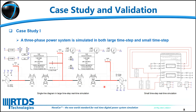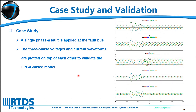We have analyzed three case studies to show the effectiveness and accuracy of our proposed FPGA-based model. The first case study is a three-phase power system where a fault bus is placed in the middle of a transmission line. The same system is simulated in both large timestep and small timestep. In the small timestep simulation, the transmission line is simulated on FPGA. We applied a single-phase A fault at the fault bus and plotted the three-phase voltage and current waveforms from both simulations on top of each other to validate the FPGA-based model. As we can see, the simulation results are closely matched.